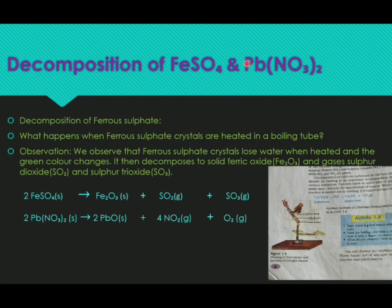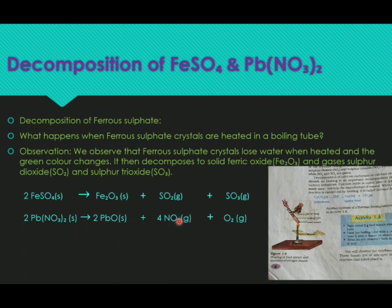When lead nitrate is decomposed, lead nitrate is taken in a boiling test tube and heated. You can see brown colour fumes coming out. This brown colour fume is due to the gas nitrogen dioxide. This reaction and activity are very important from an exam point of view. Lead nitrate decomposes to lead oxide, nitrogen dioxide, and oxygen. The brown fumes are due to nitrogen dioxide gas.